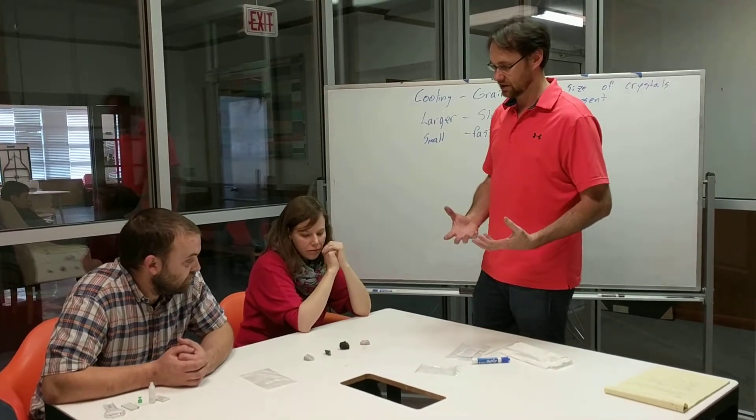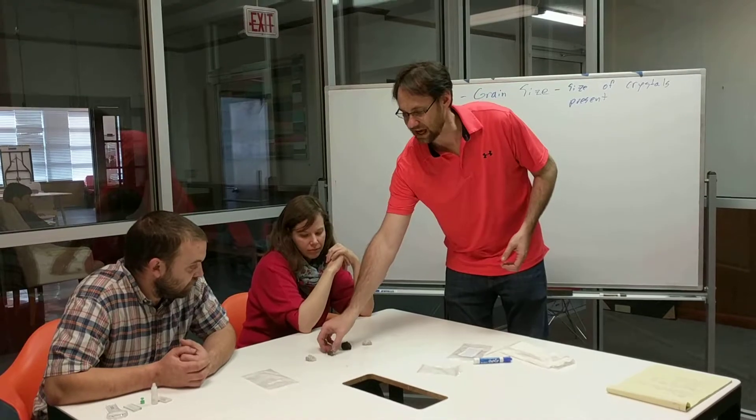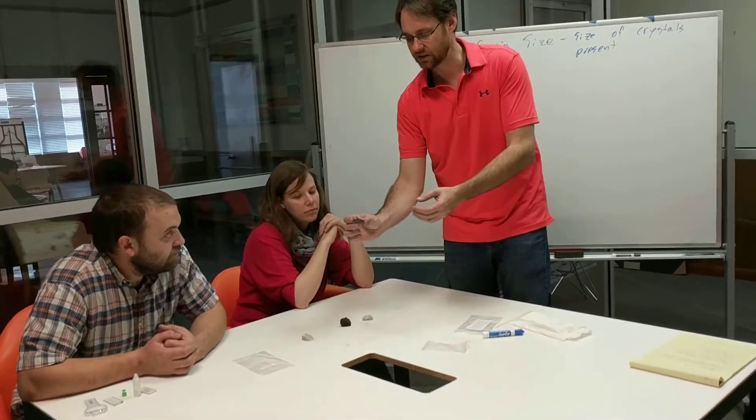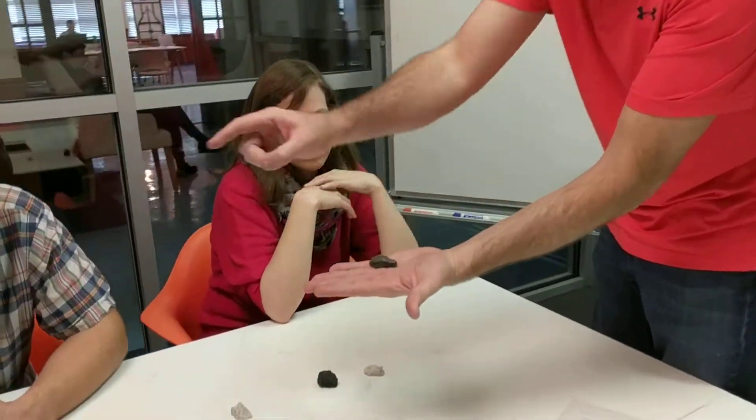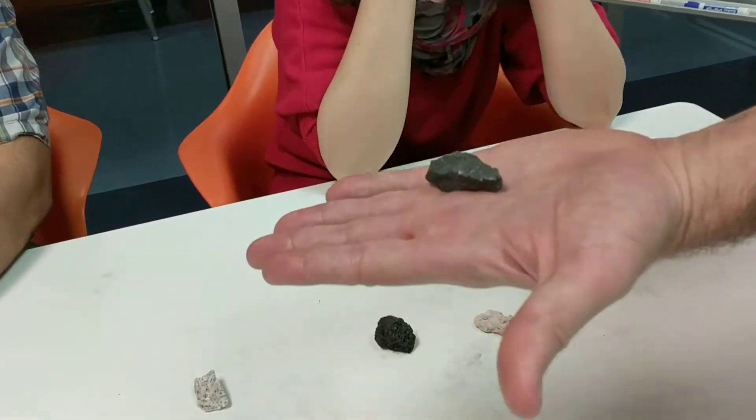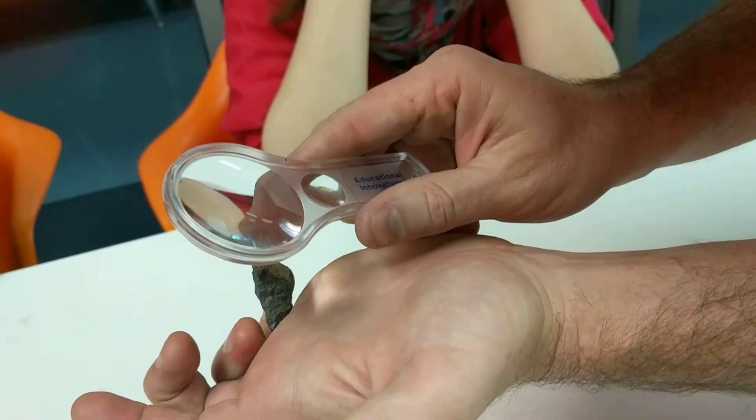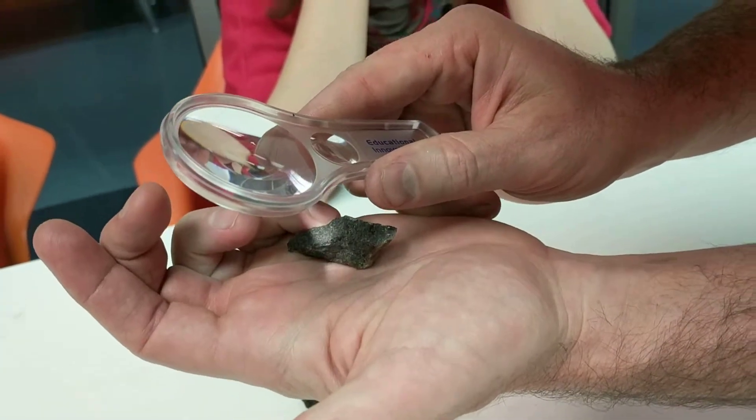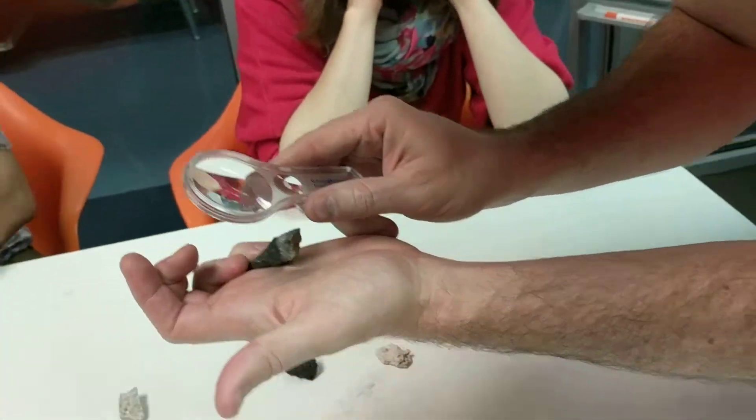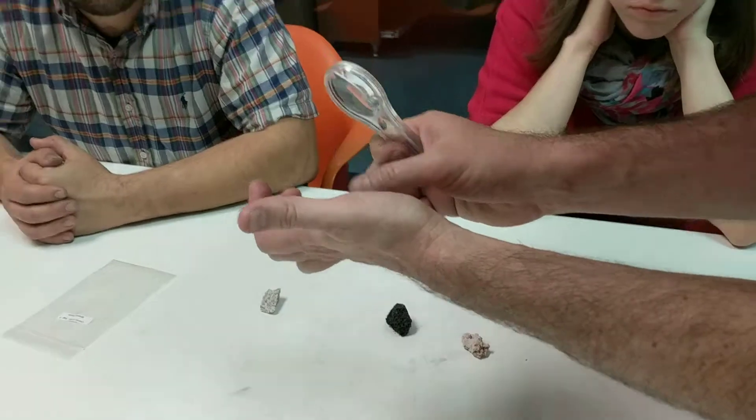If you can't see them on the other hand, such as this black piece here, if you use the magnifying glass on this one, you can't see any individual grains.